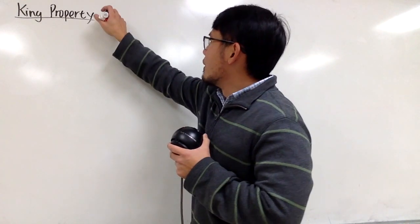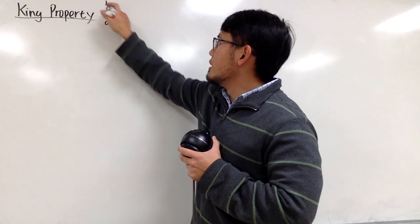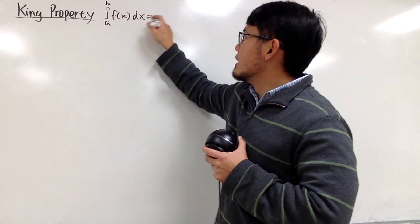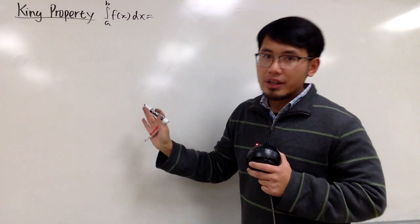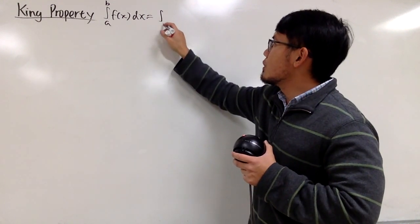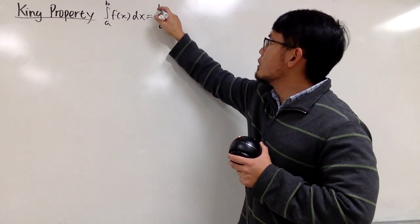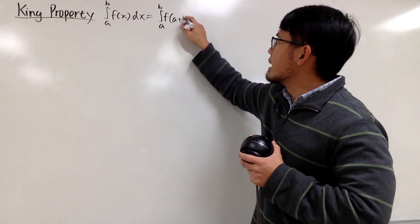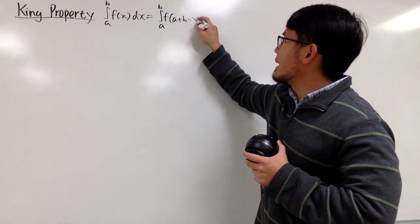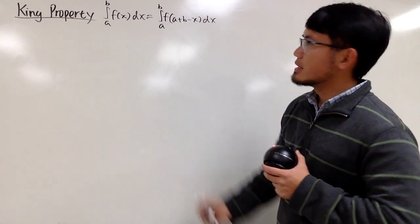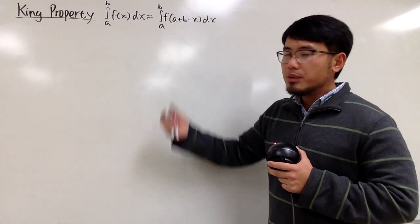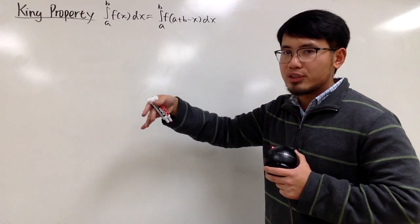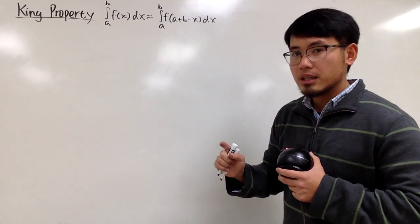If you have to integrate from a to b of a function f dx, this is actually the same as the integral from a to b of f of (a plus b minus x) dx. If you look at the inside, this is kind of like a reflection, so this is actually really nice.